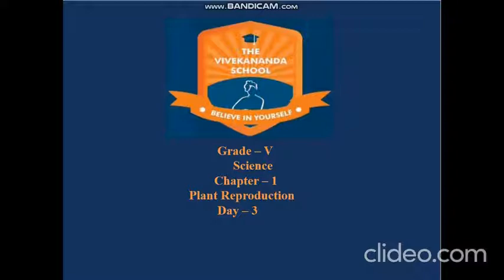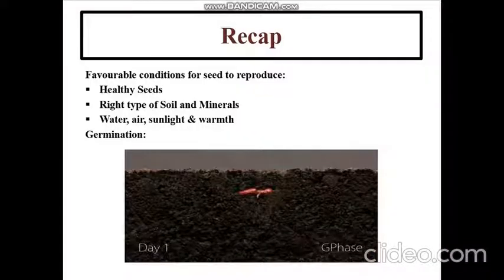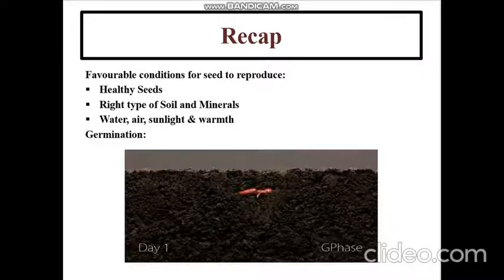Let me first have a quick recap. In the last session you learned about the favorable conditions for a seed to reproduce. The three conditions were: the seed should be healthy, we need to have the right type of soil and minerals, and the seed should get sufficient water, air, sunlight, and warmth.